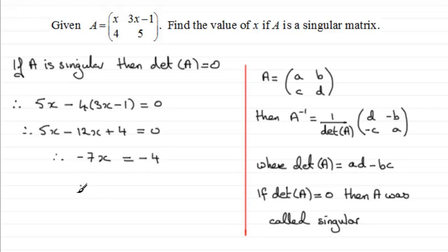And now if we divide both sides by minus 7, you get x equals 4/7. And that's how you find x then.